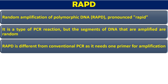RAPD is different from conventional PCR as it needs only one primer. In normal PCR, we require two primers — one forward and one reverse — plus Taq polymerase or any thermostable polymerase, nucleotides, and magnesium. Here we require all of those as well. The only difference is that in conventional PCR we require both forward and reverse primers, but in RAPD we are not requiring both; we are going to use only one random primer.